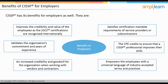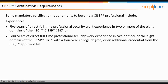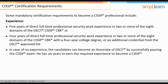CISSP certification requirements: candidates need five years of direct full-time professional security work experience in two or more of the eight ISC² CISSP CBK domains, or four years with a four-year college degree or additional credential from the ISC² approved list. Candidates with no experience can become an Associate of ISC² by successfully passing the CISSP exam.